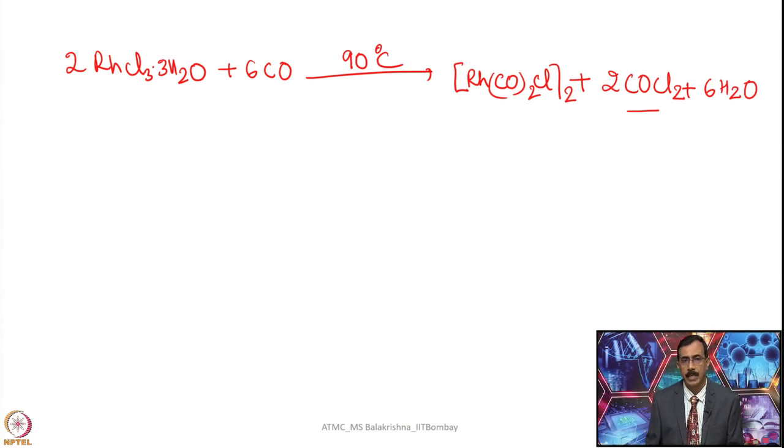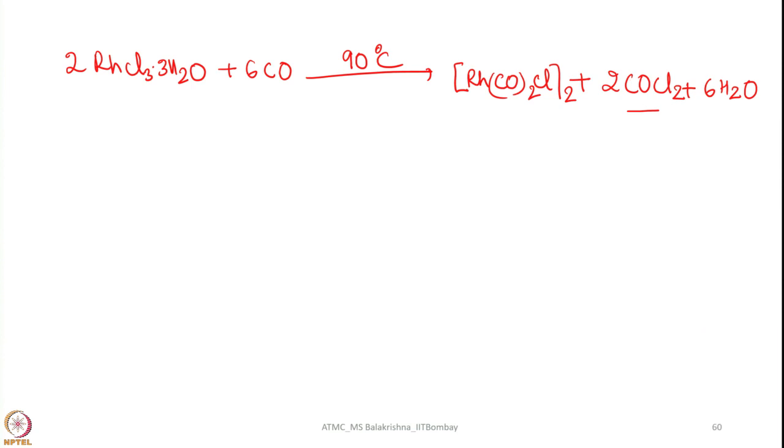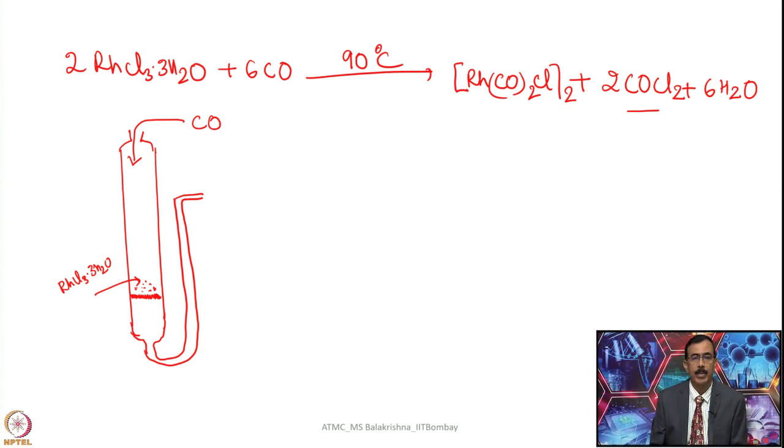How to do this reaction? As I mentioned in this case we are not doing using any solvent. For this one it is very simple, you have to choose an apparatus like this, have a frit here and then you should have a side tube like this. CO should bubble - of course the flow of carbon monoxide can be monitored by passing carbon monoxide through a paraffin bubbler so that you know how much it is coming.